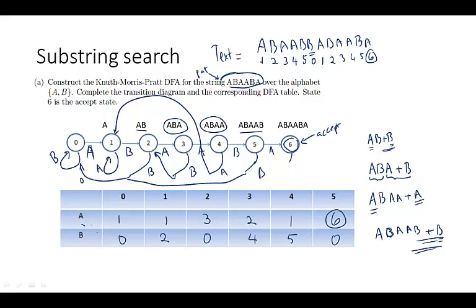As you scan the text and reach state 6, you have accepted it. This is how the algorithm works with the text. Once you build the machine, you send the text to the machine and the machine says: we recognize that pattern.